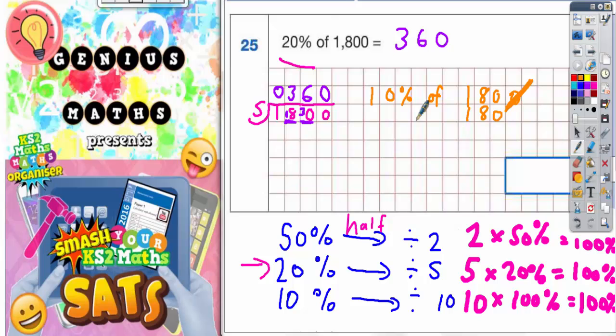So if 10% is worth 180, you need 20%. So you're going to need to double 180. So it's going to be the same as 180 times 2. Now the easiest way to double 180 is to cover up the 0 and double 18, and then put the 0 back on at the end.